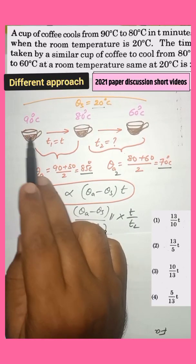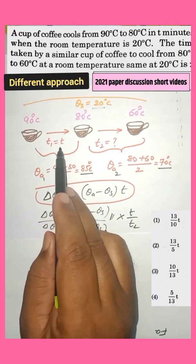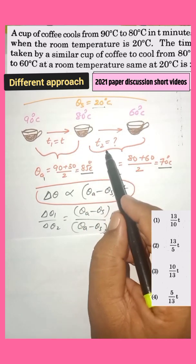So here this is the temperature decrease in the coffee from 90 to 80 degrees Celsius in time T, and 80 to 60 degrees Celsius in time T2.